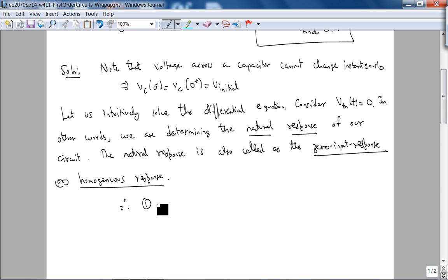The natural response is also called the zero input response, or homogeneous response. So, we call this equation 1. Therefore, 1 becomes dVc/dt equals minus Vc over Rth times C, with of course non-zero initial conditions, right? So Vc of zero plus is V initial.